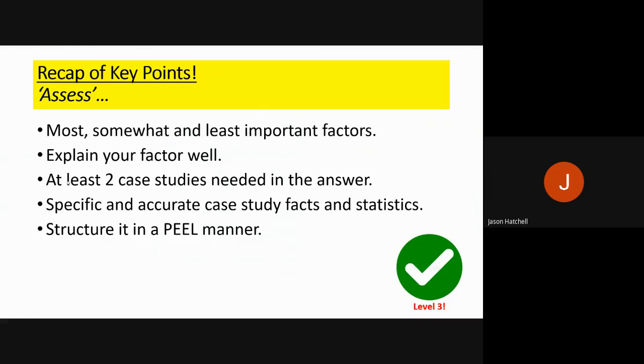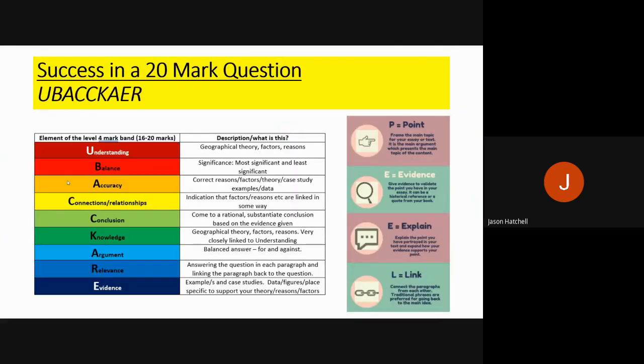Now let's move on to 20 mark answers because they are very different. You can see a similar screen to earlier but there is a difference — this is not UBACKER. There are more elements, and two elements are added above and beyond a 12 mark question: conclusion and argument. For a conclusion, you must finish your 20 mark answer with a summary of everything you've said along with a very rational and considered decision on which side is best. And for arguments, you must have a balanced argument — for and against the question.